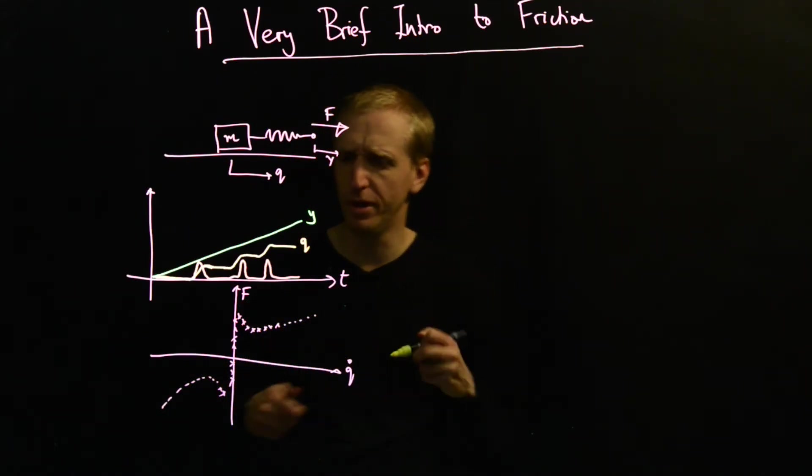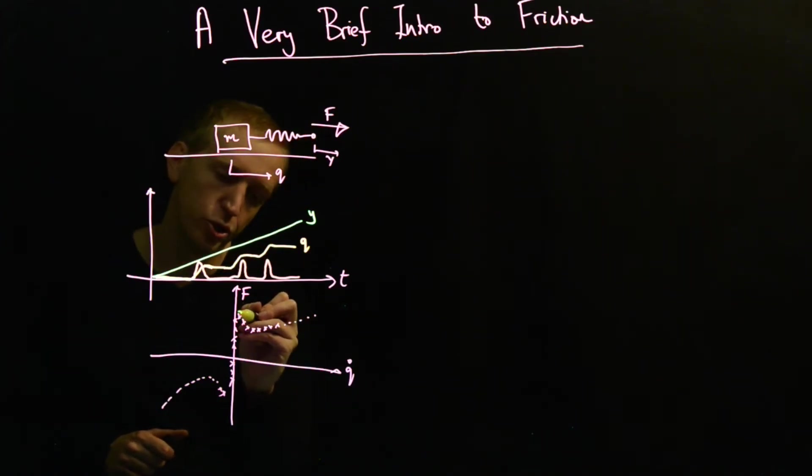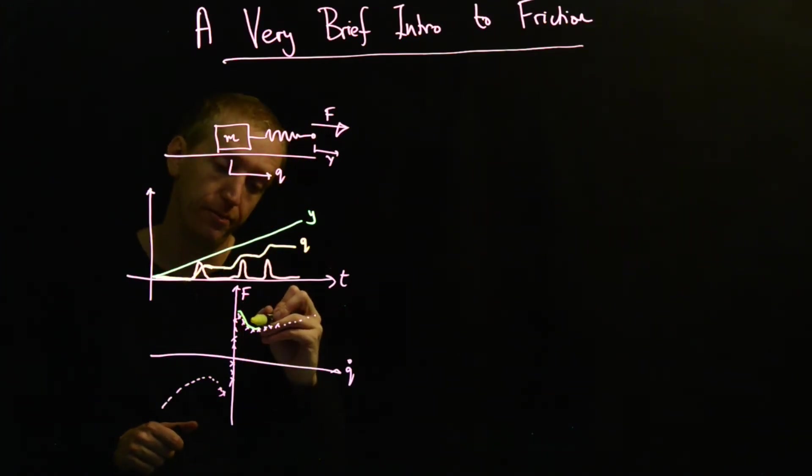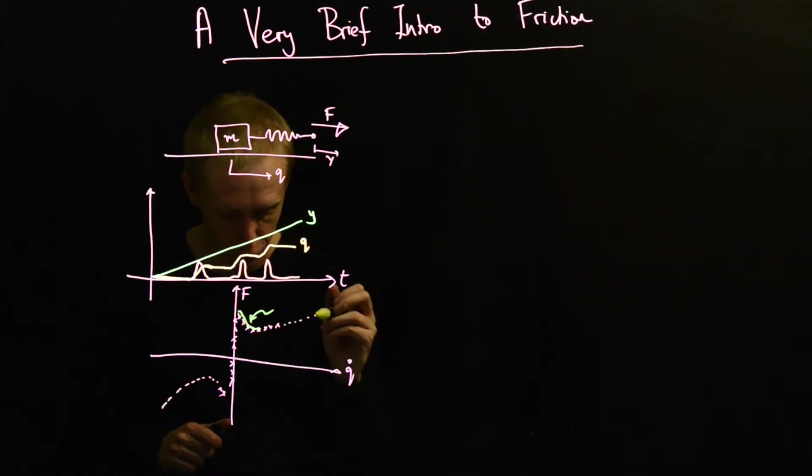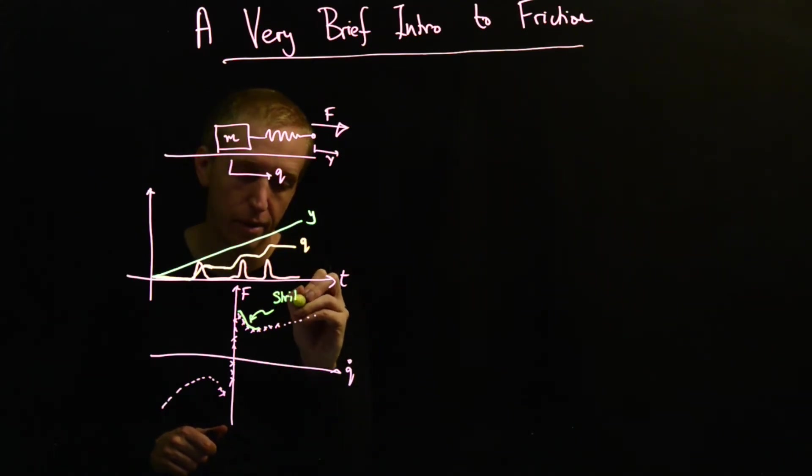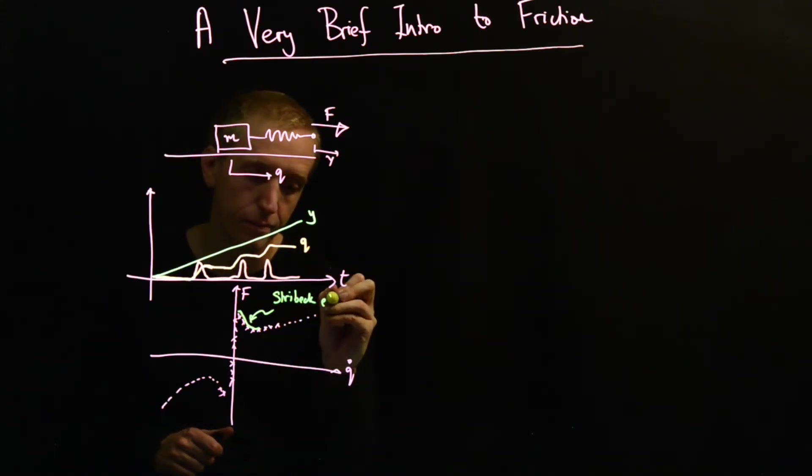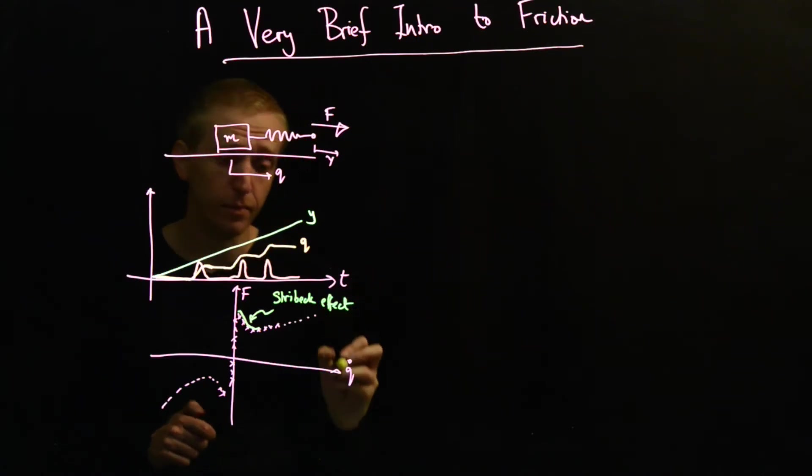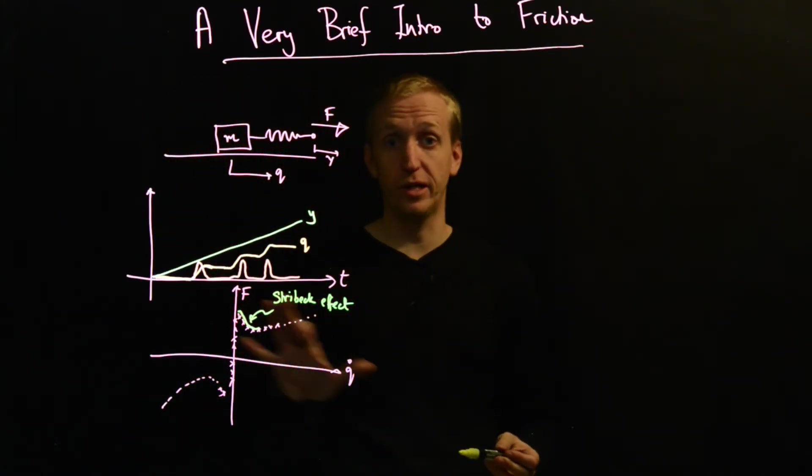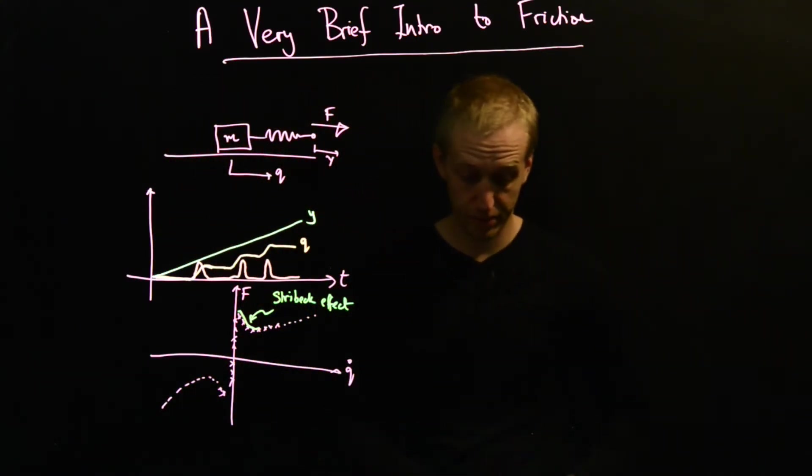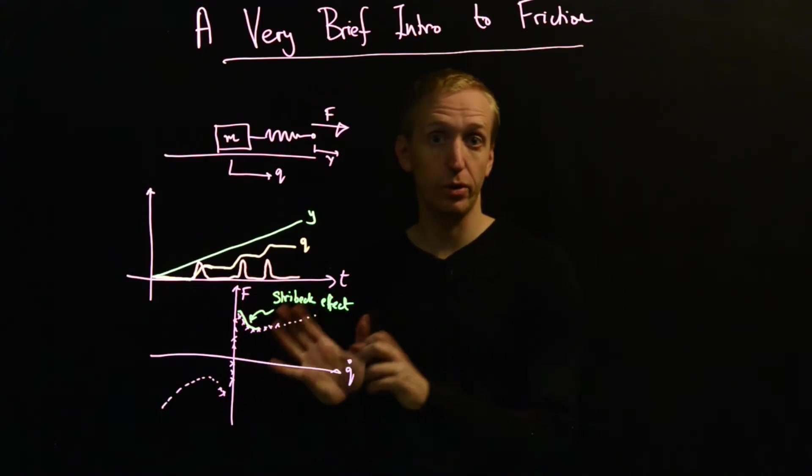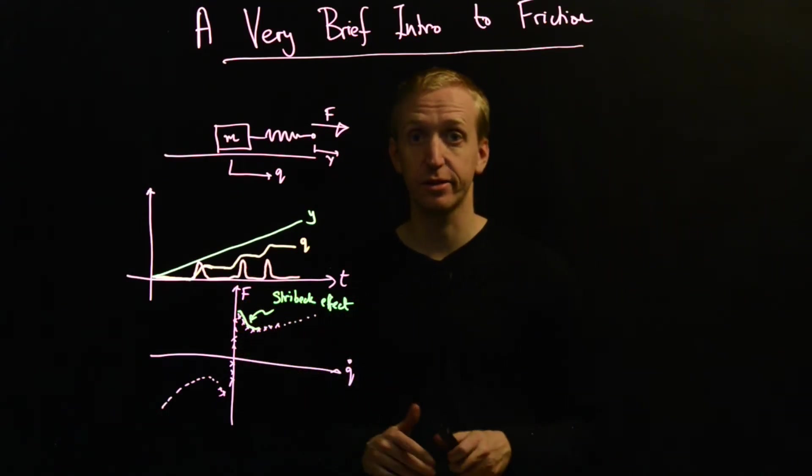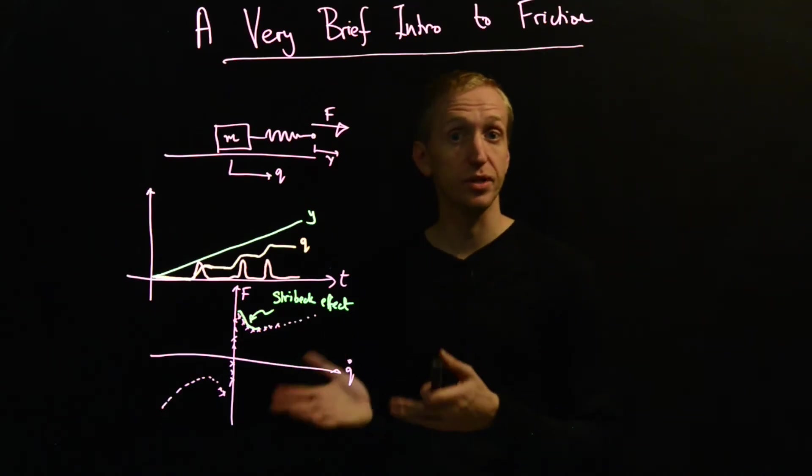This phenomenon in which the friction drops off has a special name - it's called the Stribeck effect. And really for the rest of the lecture and our treatment of friction, we'll be considering models that look something like this. They tend to be velocity dependent.